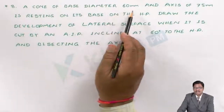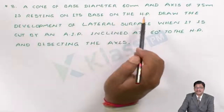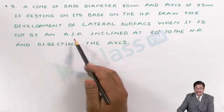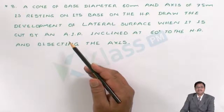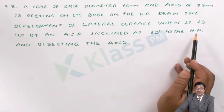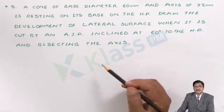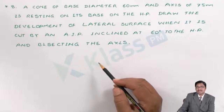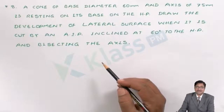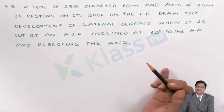A cone of base diameter 60 mm and axis of 75 mm is resting on its base on the HP. Draw the development of the lateral surface when it is cut by an AIP — Auxiliary Inclined Plane. These are planes which incline with HP, here inclined at 60 degrees to the HP and bisecting the axis. The first phase is to draw the solid with the sectional plane, then develop the respective lateral surface area.